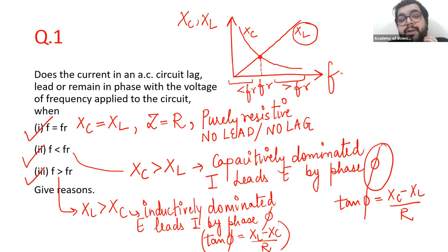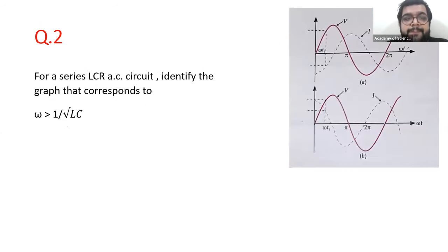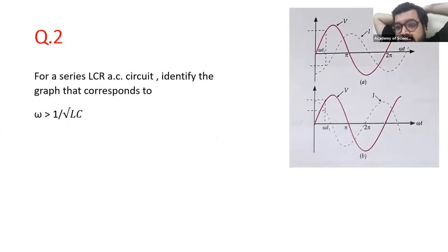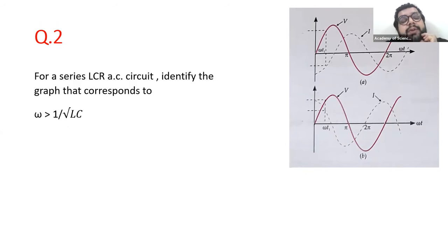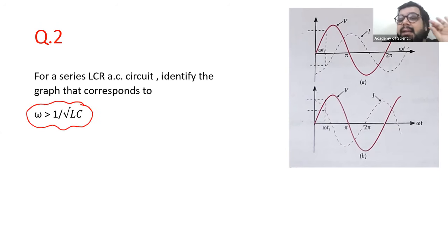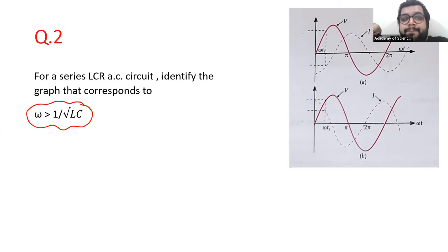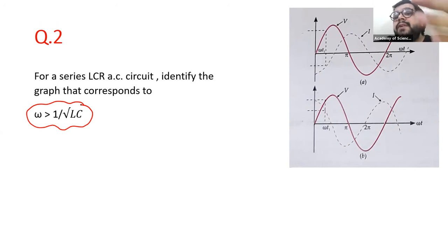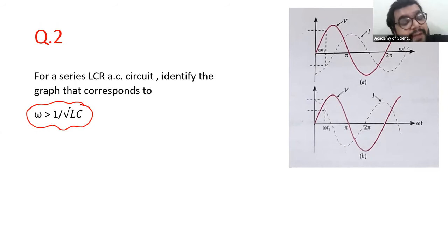Let me move to question number two. There are two graphs given, and you need to identify which graph corresponds to which situation. When ω is bigger than 1/√LC, in which diagram are the voltage and current graphs correctly drawn? This is a conceptual question related to our previous discussion.